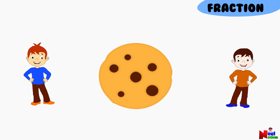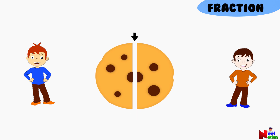Now, let me ask you a tricky question. You have only one cookie. How would you share this one cookie with two of your friends equally? I would first break the cookie into two equal parts. Yes, then I would give one part to each friend.